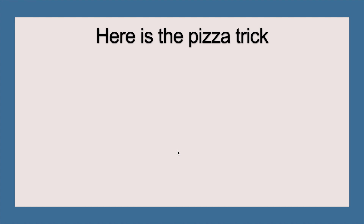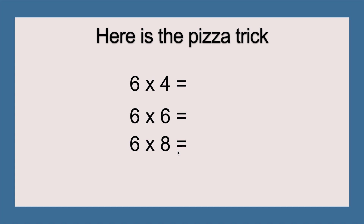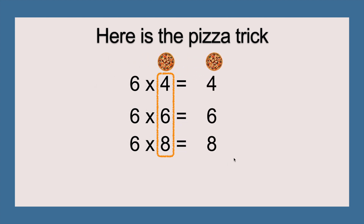Here is the pizza trick. I've listed three questions right here. They are six times four, six times six, and six times eight. We're going to circle this column and put a full pizza above it. We're going to add the four in the ones place. So six times four, we're going to add the four in the ones place. Six times six, the six in the ones place. Six times eight, the eight in the ones place.